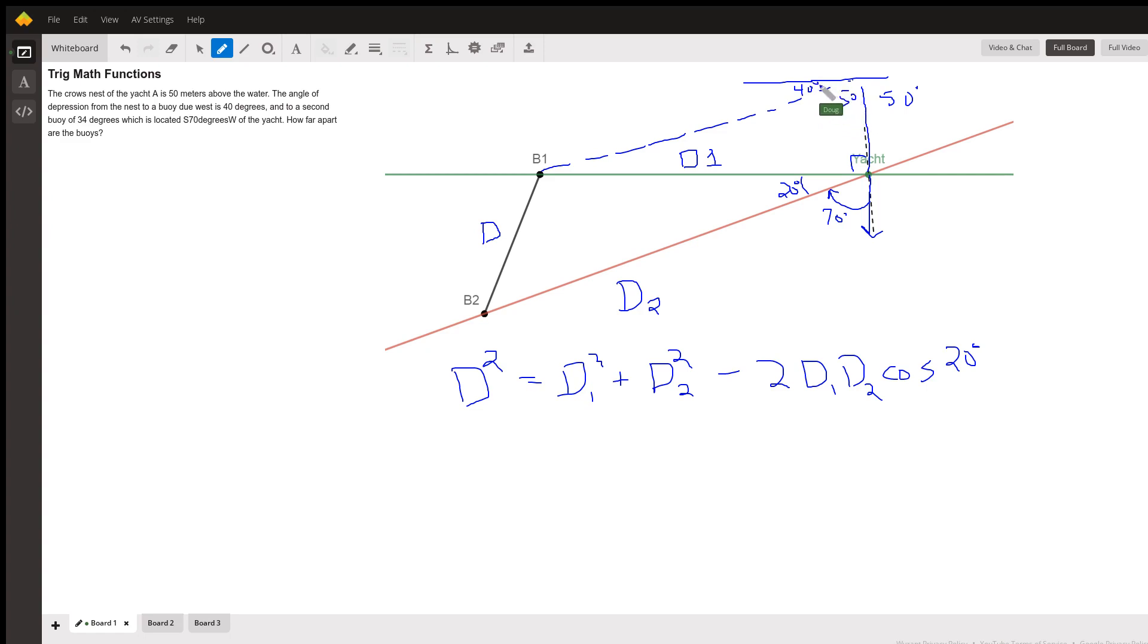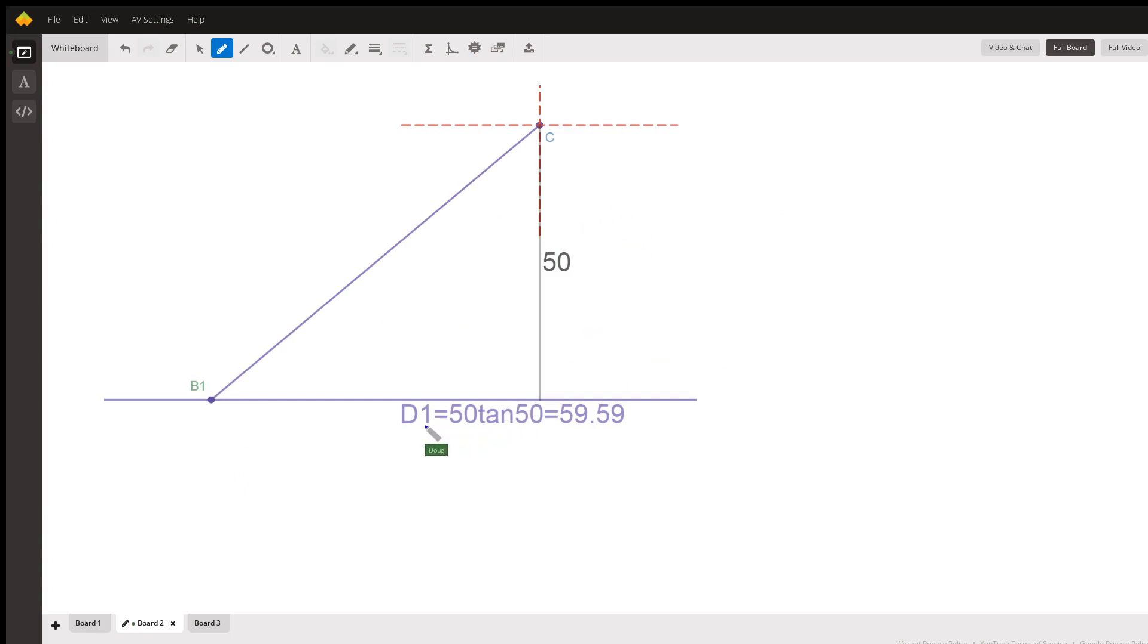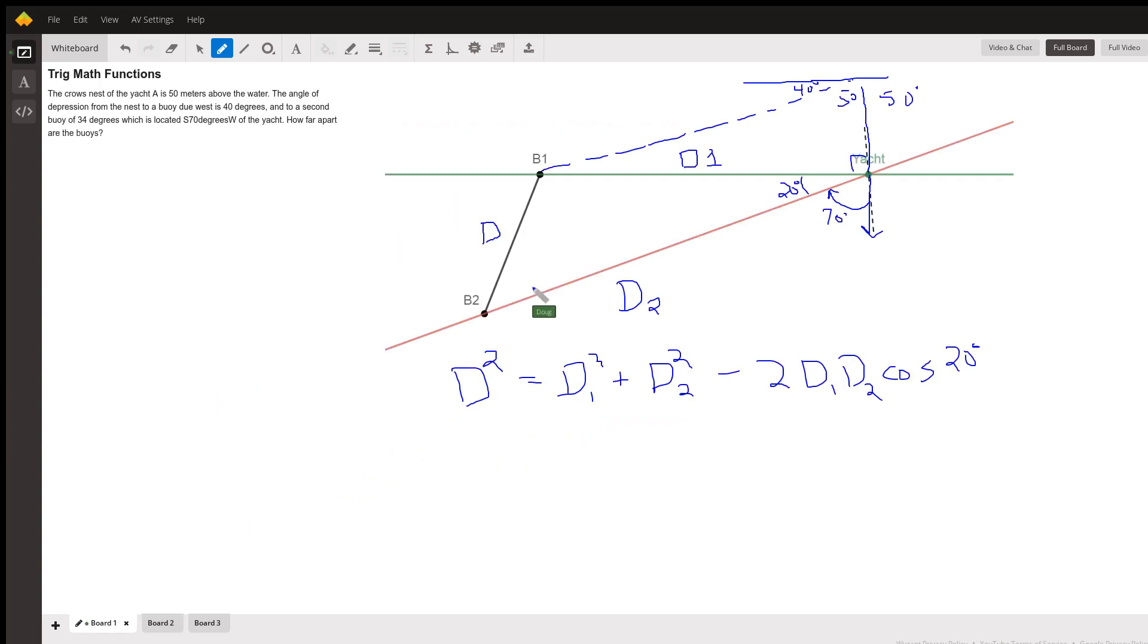So I can find D1 by saying the tangent of 50 equals D1 over 50. And here's what that looks like. So D1, this distance right here, is about 59.59. And so if we go back to board one, I can put 59.59 right here.